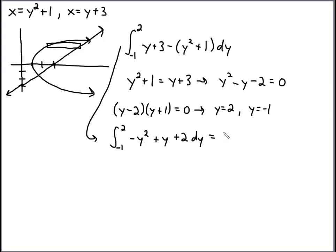So we'll find our anti-derivative: negative 1 third y cubed plus 1 and 1 half y squared plus 2y, evaluating this between negative 1 and 2.